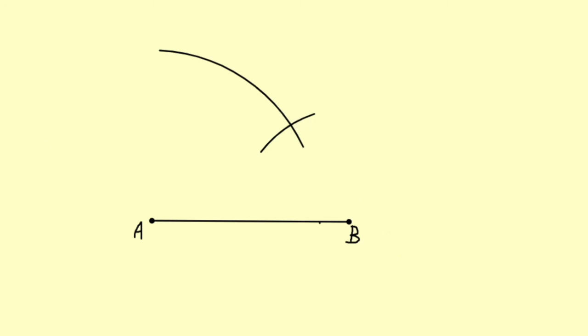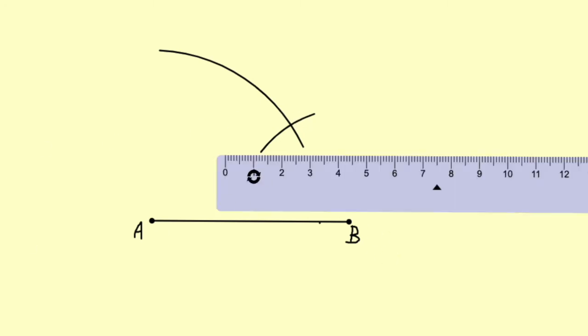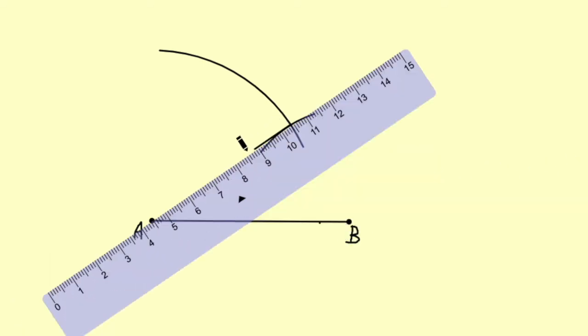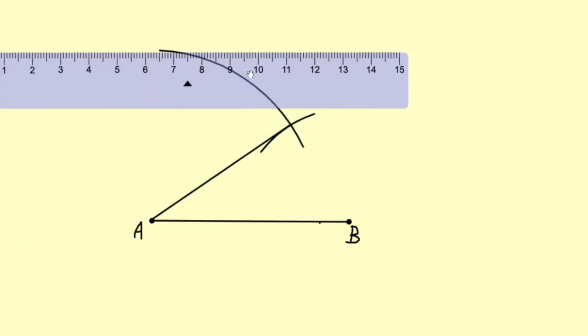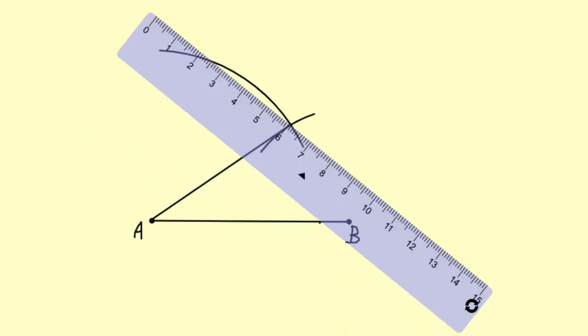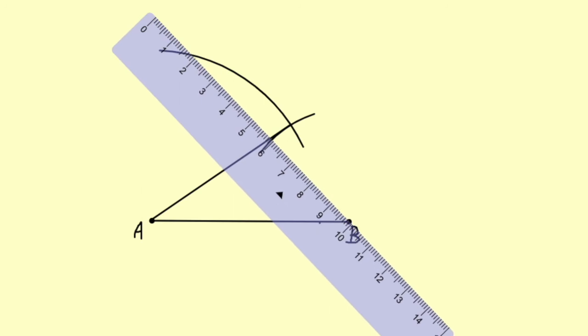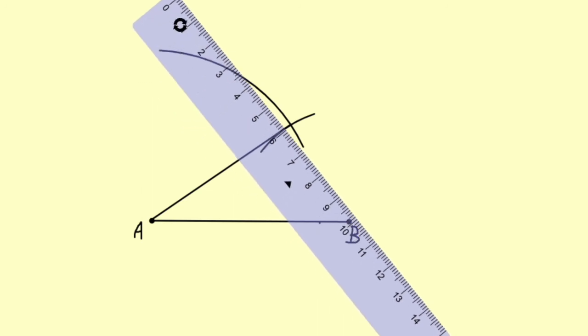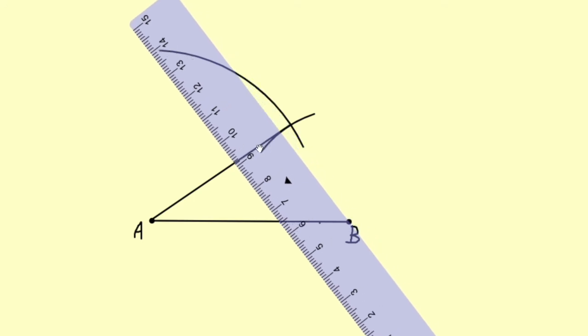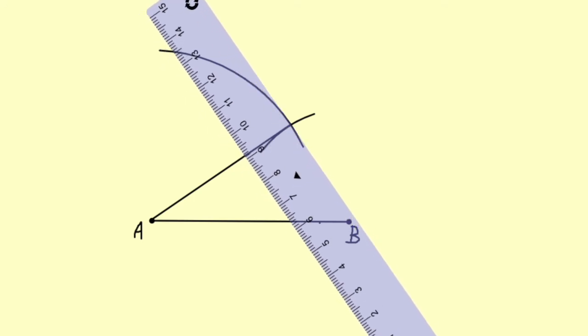And now using the scale, we'll join it. And same with the other side, we'll join it with the other vertex. The point of intersection of both the arcs, we're going to join with the other vertex, that is point B.